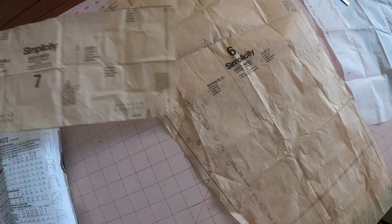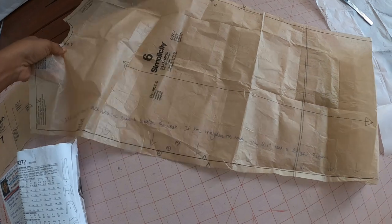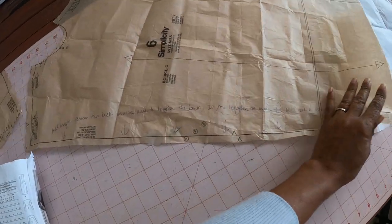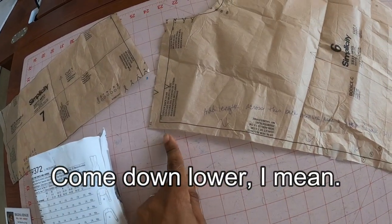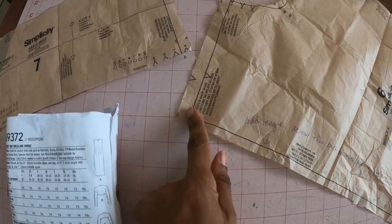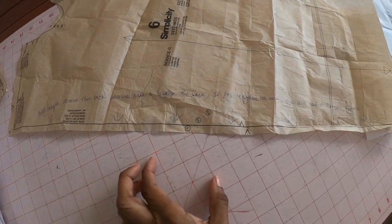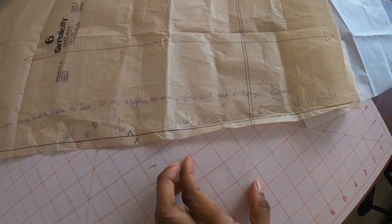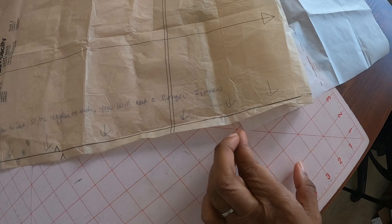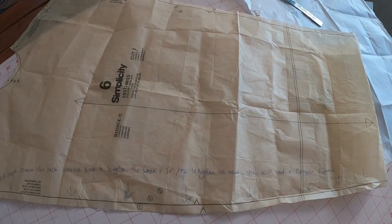If you decide that you want your back finished hem edge to come up a little bit higher, then you would just go ahead and lengthen in this center back seam area. Just lengthen this however much you want your back area to be longer.